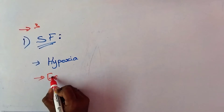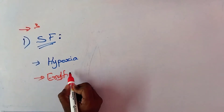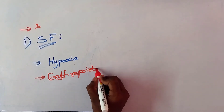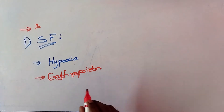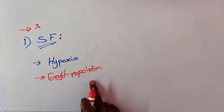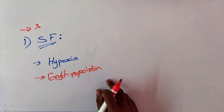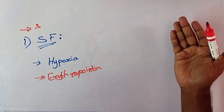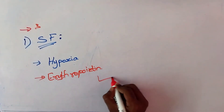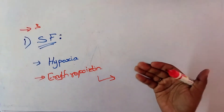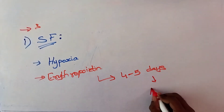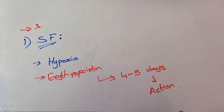The second stimulating factor is erythropoietin. This is the hormone we already discussed while studying about hypoxia. It is released due to low level of oxygen. It is also called hemopoietin or erythrocyte-stimulating factor. It is secreted from the kidney, and it causes formation and release of new erythrocytes into circulation. After secretion, it takes 4 to 5 days to show its action.